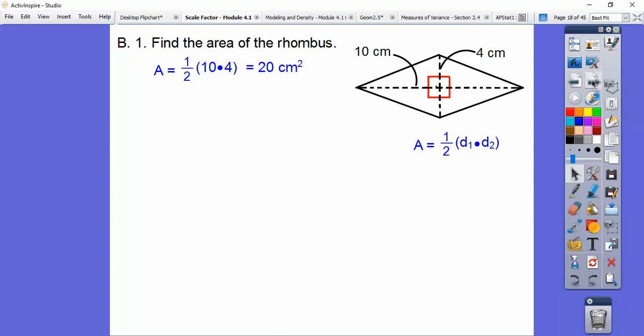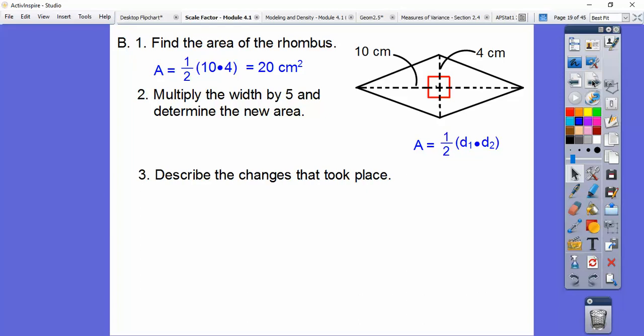Then we're going to multiply the width by 5 and determine the new area, then describe the changes. So the width we're going to multiply by 5. Instead of it being 10, it's 10 times 5 or 50. So 50 times 4, then half of that is 100. What happened was when the width changes by a factor of 5, so does the area.